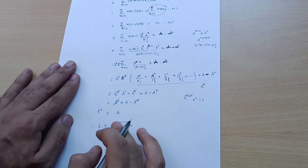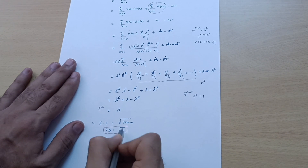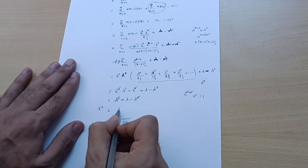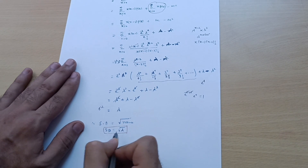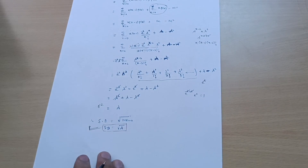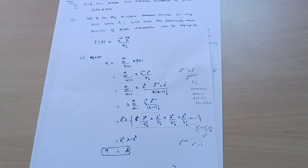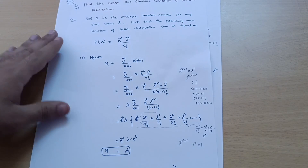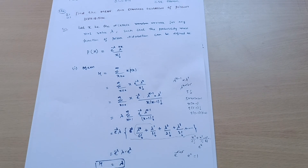The variance is λ. The standard deviation is the square root of variance, so standard deviation = √λ. This completes the derivation: the mean of Poisson's distribution is λ and the standard deviation is √λ. Please share this video with friends who need it — thanks for watching.